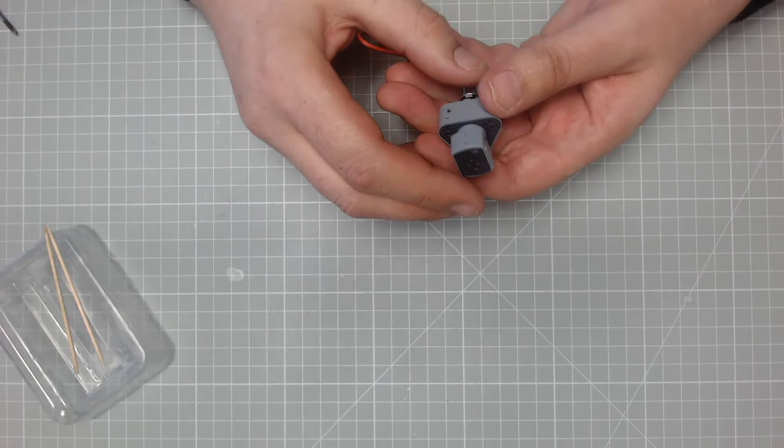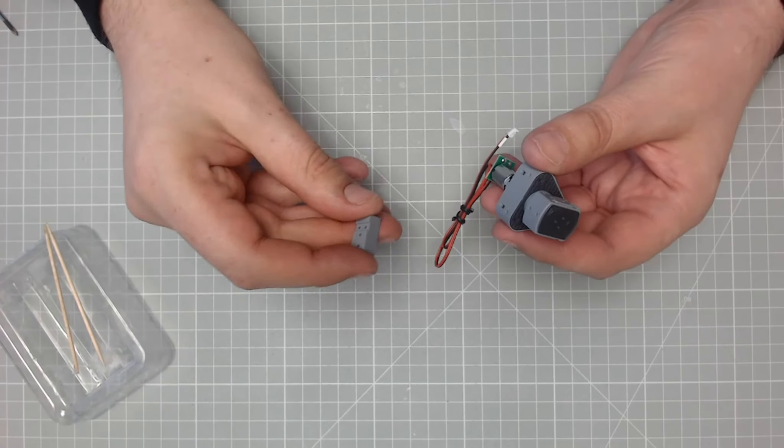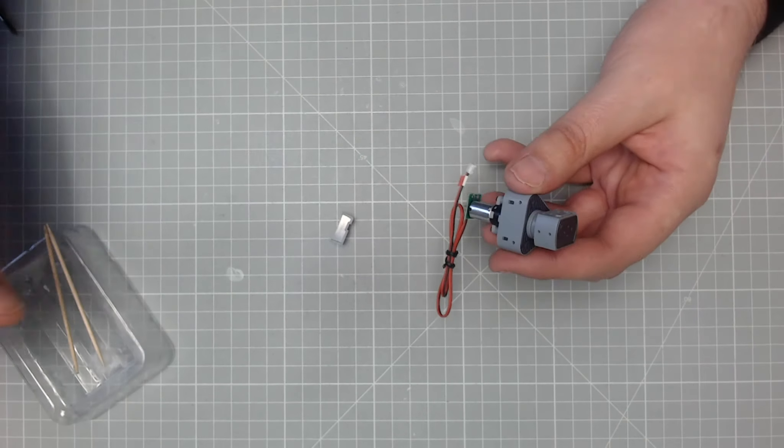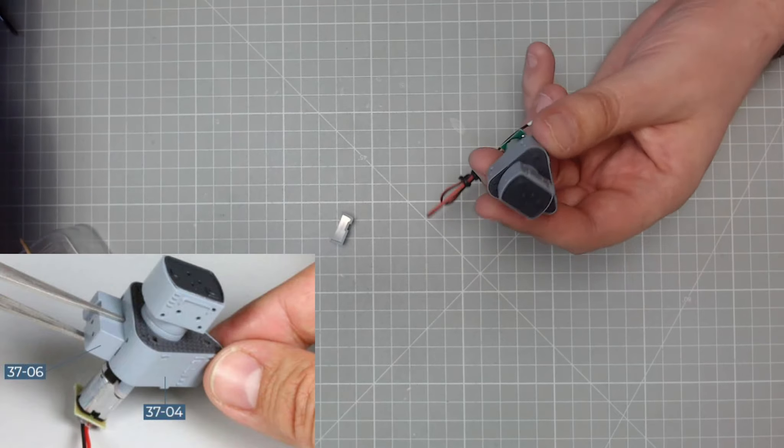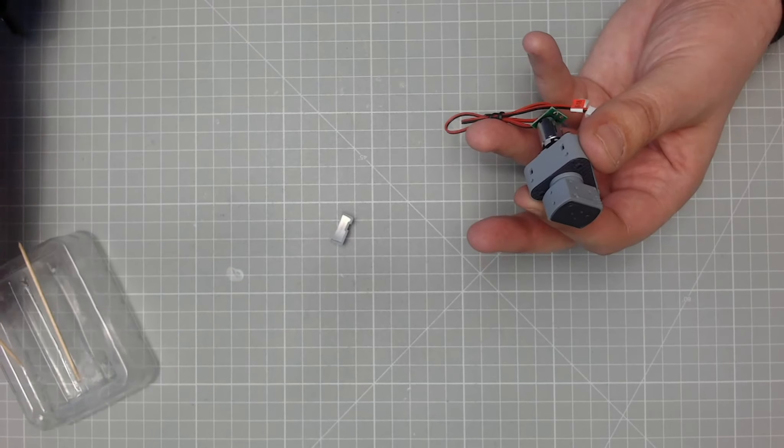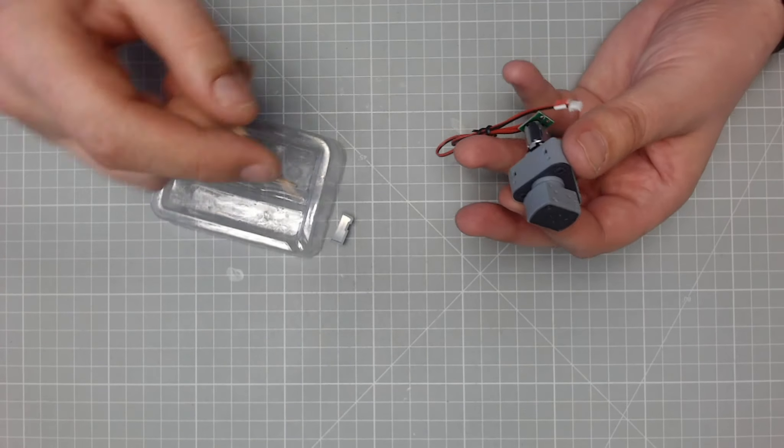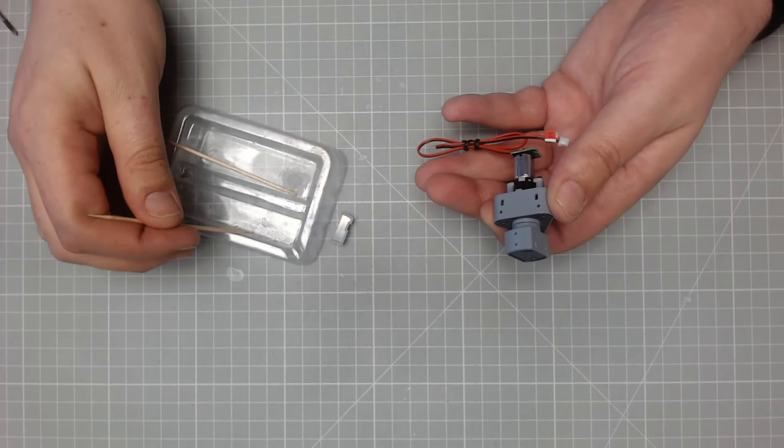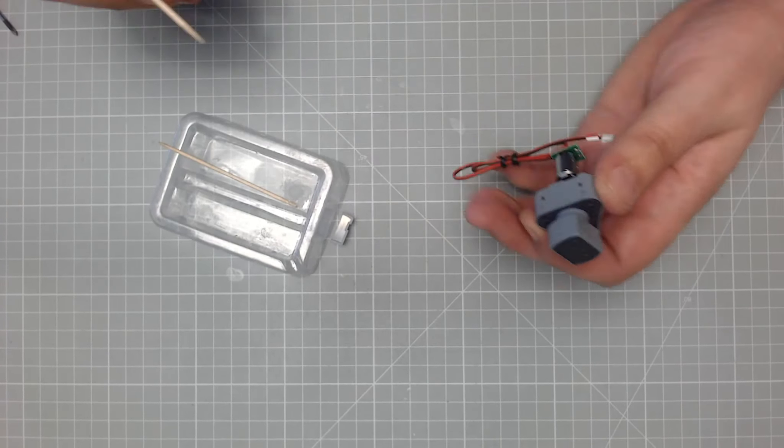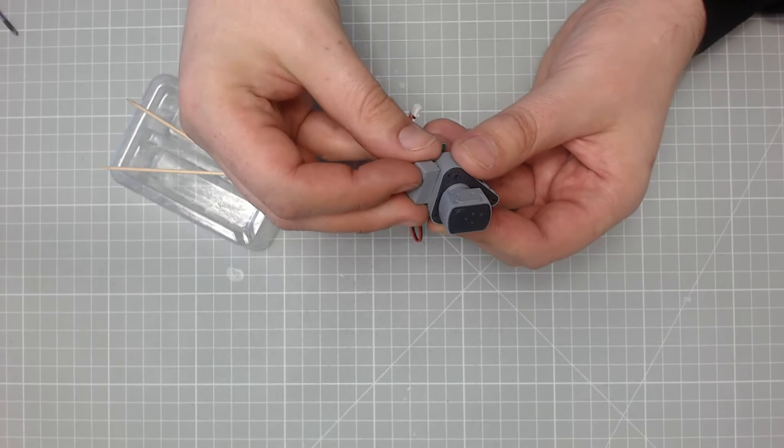And then more or less the last thing we need to do is we need to put this part on here. It's going to go on like that with this flat part facing upwards. Again, we need to glue this in place. Okay. And we'll just pop this into place, just like so.